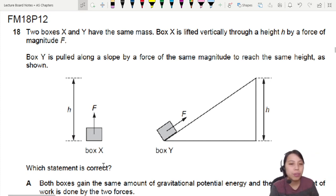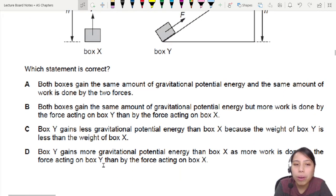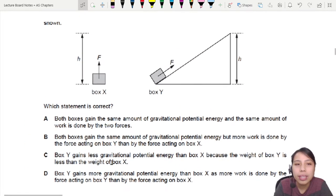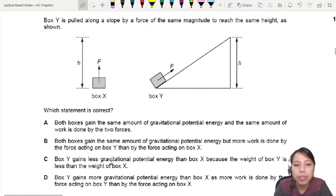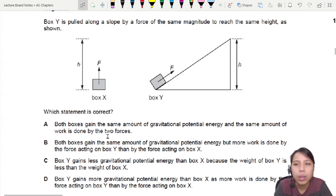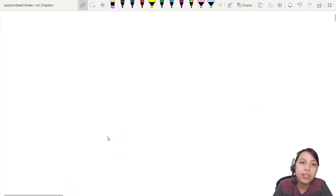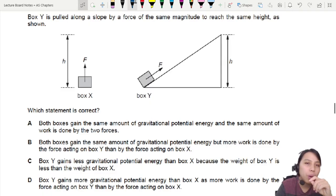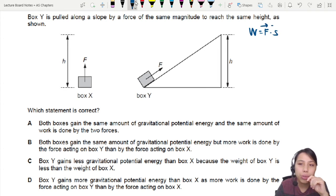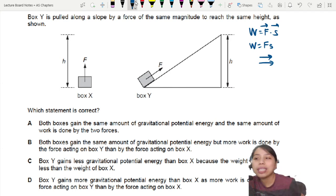So we're looking at a work done kind of question. Among all these statements, they say both boxes gain the same amount of GPE and same amount of work done by the two forces. Wait, what is work done again? Work done is force times distance, force times displacement. The original is F dot S and these two are vectors so the direction matters. But at the end of the day, we can simplify to FS if F and S are parallel in the same direction. That's our rule here.